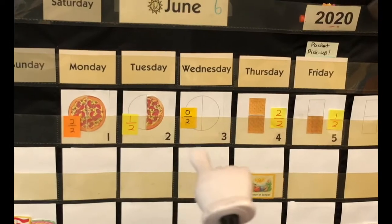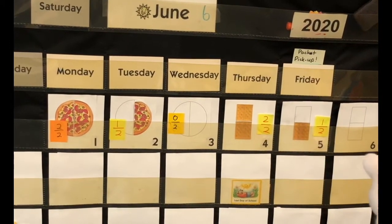We've had days 1, 2, 3, 4, 5, and 6 in June.